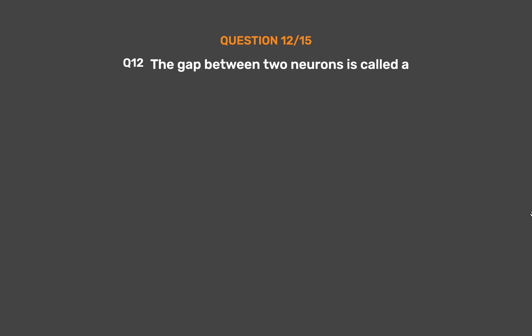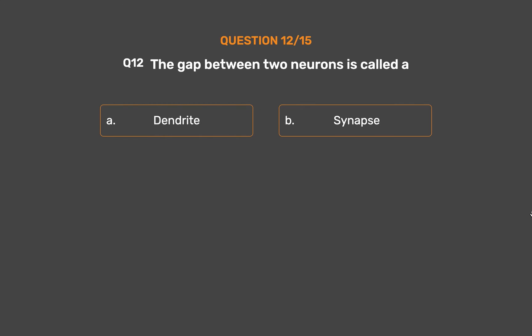Question No. 12. The gap between two neurons is called: Option A - Dendrite. Option B - Synapse. Option C - Axon. Option D - Impulse.